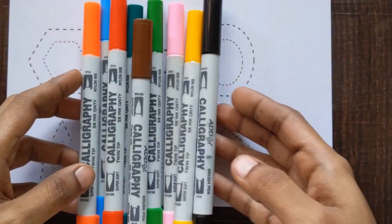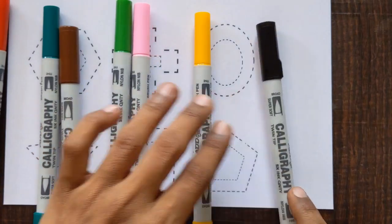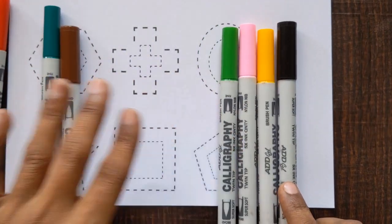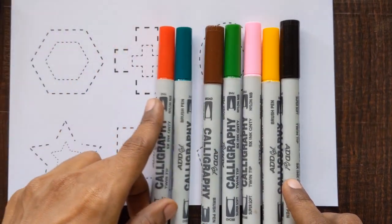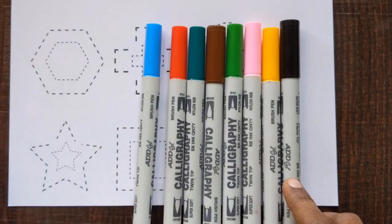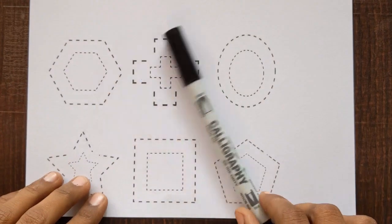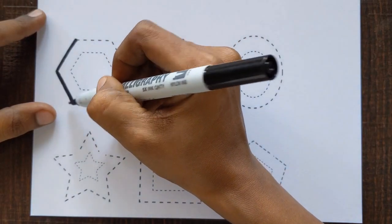Hello guys, welcome back to my channel. Let's learn some colors: black, yellow, pink, light green, brown, dark green, red, sky blue, and orange. Let's start with black color and test the shapes by following the dots.